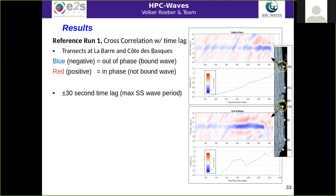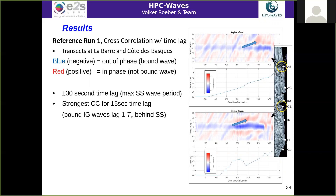Looking at cross-correlations with a timelag, we examine two different profiles: one in the northern part of the domain at La Barre, and the other in the center at Côte de Basque. We use a plus-minus 30-second timelag, which corresponds more or less to the boundary between infragravity and gravity waves. We find that the strongest cross-correlations are visible for about a 15-second timelag, indicating that the infragravity wave bound to the wave group is lagging behind by about one peak period.